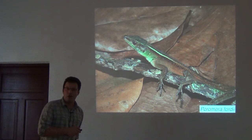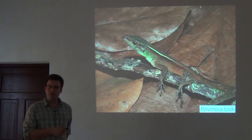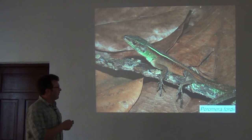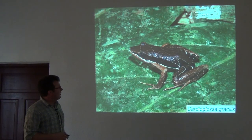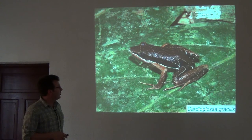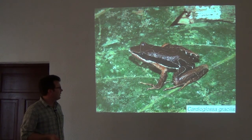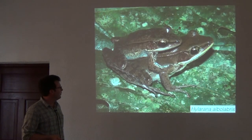We also see beautiful lizards — hopefully we'll find some Poromera, which are lacertids with really long, beautiful tails. This is a leaf litter frog, Cardioglossa, which I mentioned before — these are really quite diverse in Cameroon.